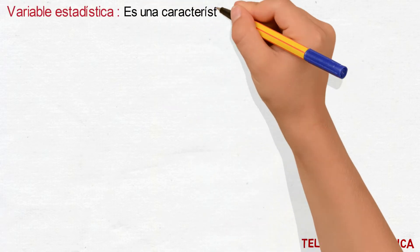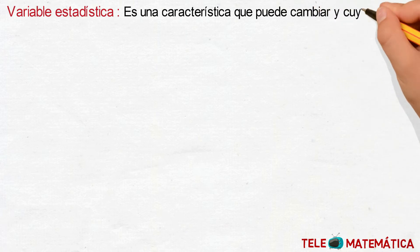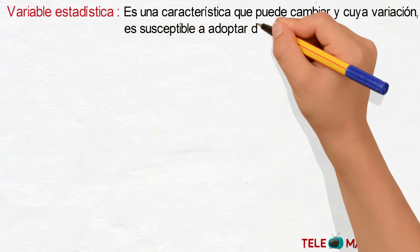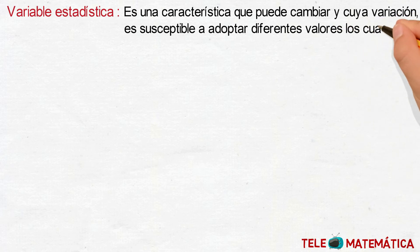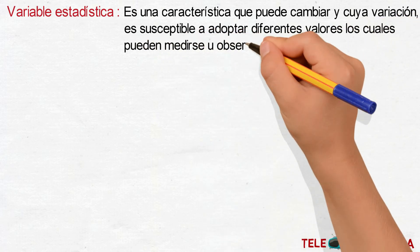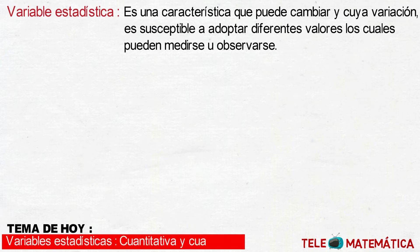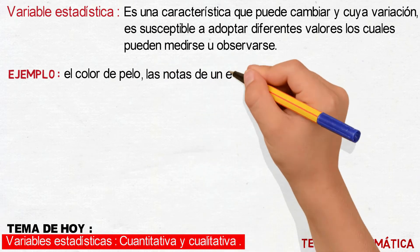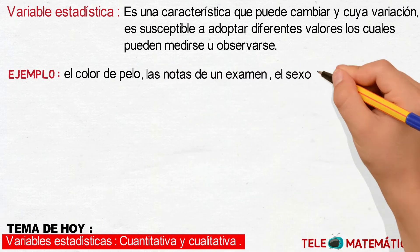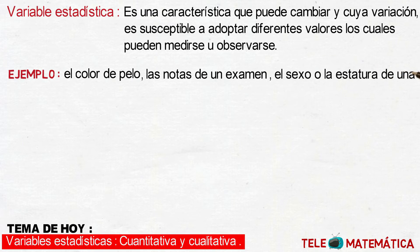Para comenzar con el video, introduciremos el concepto de variable estadística, que se define como una característica que puede cambiar o cuya variación es susceptible a adoptar diferentes valores, los cuales pueden medirse u observarse. Por ejemplo, el color de pelo, las notas de un examen, el sexo o la estatura de una persona.